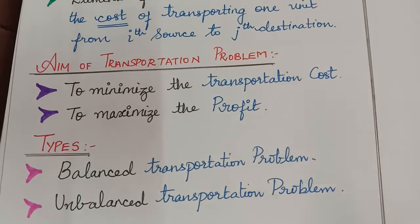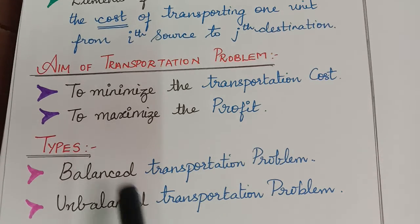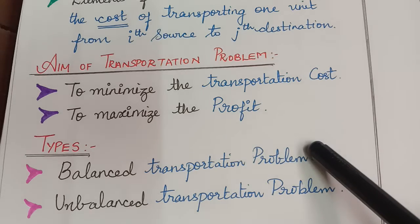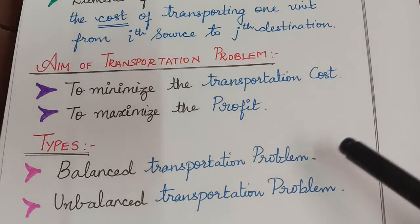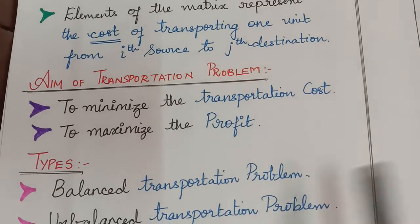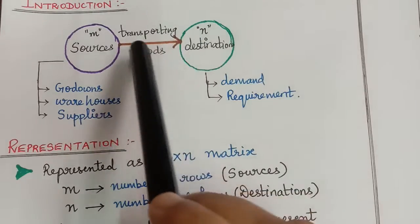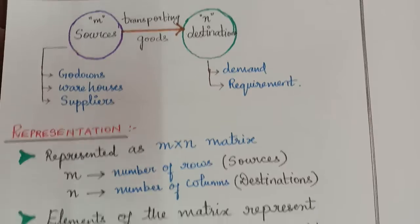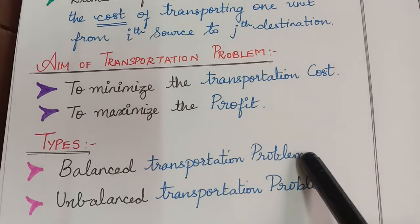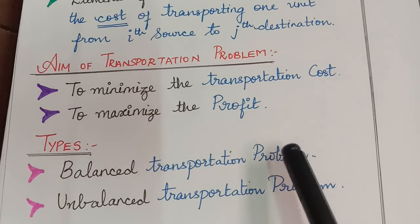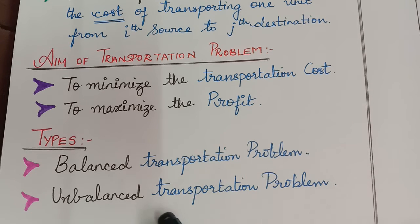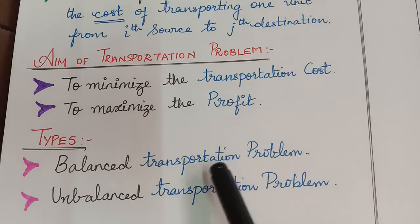There are two types of transportation problems: balanced transportation problem and unbalanced transportation problem. For a balanced problem, the total supply and the demand will be the same — the supply from M sources will equal the requirement. When total supply equals total demand, it is a balanced transportation problem. If they are not equal, it comes under an unbalanced transportation problem, in which case we have to balance the problem before solving it.